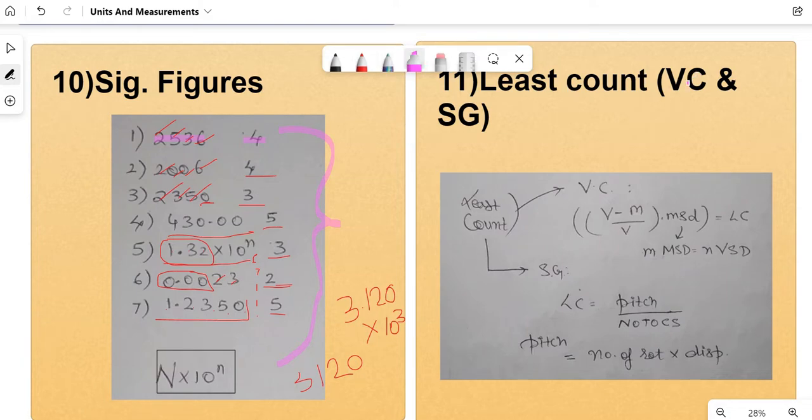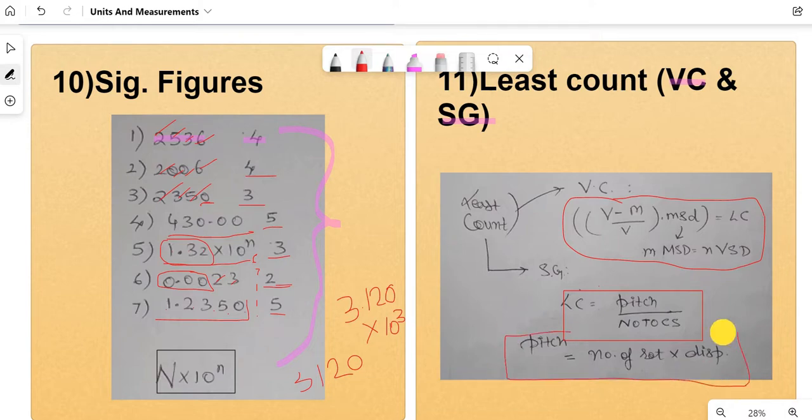Next point would be least count for vernier calipers and screw gauge. You have to make sure that you just know least count. The questions have come from least count concept. It's not exactly in NCERT, but it's part of your practicals, which means it will be repeating in the exams. It came literally in 2022, least count for vernier calipers. So you have to know the formula. It's 1 MSD minus 1 VSD, which equals (M minus V) divided by V times MSD. I'll be putting a circle because it has come in the previous year.